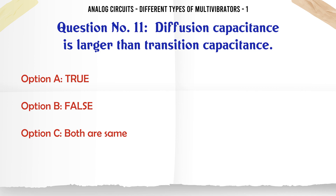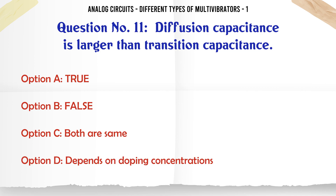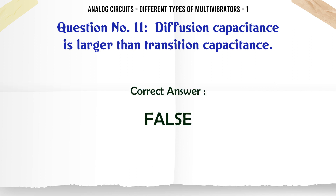Diffusion capacitance is larger than transition capacitance. A: True. B: False. C: Both are the same. D: Depends on doping concentrations. The correct answer is false.